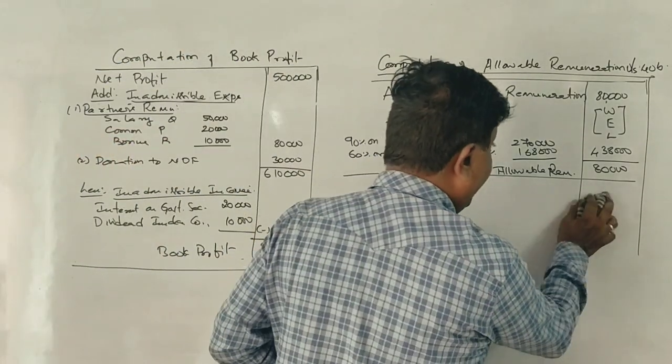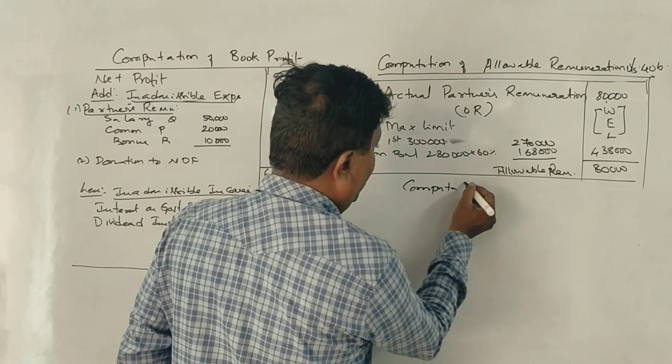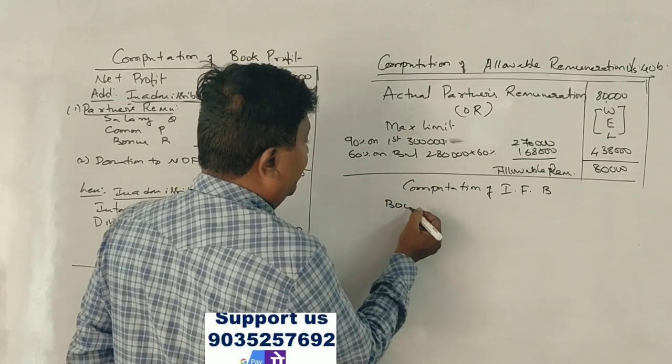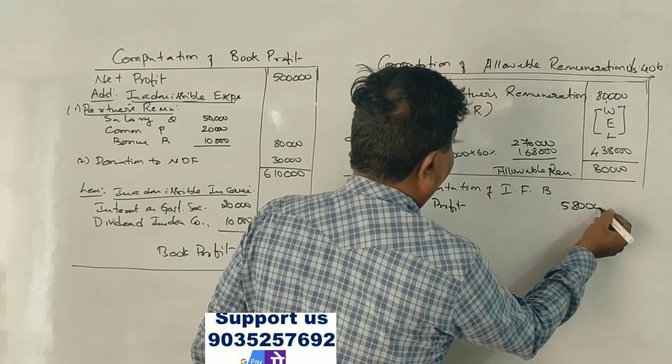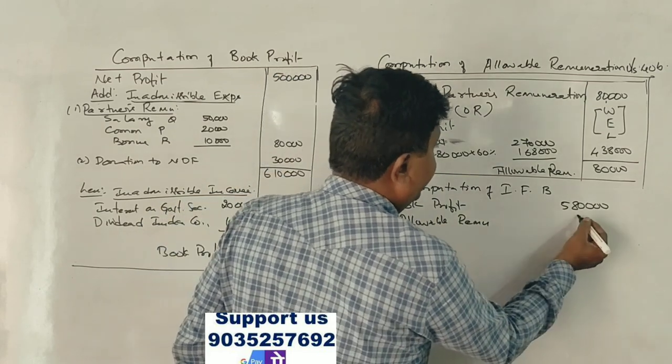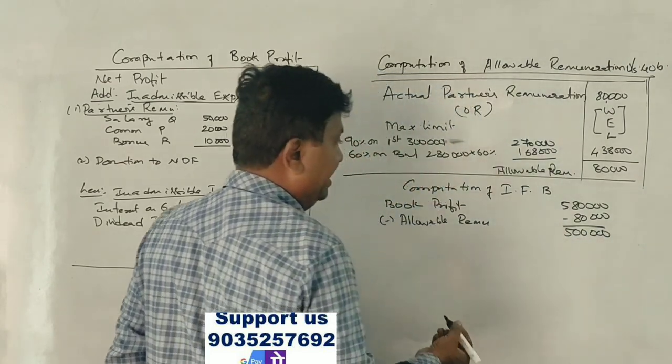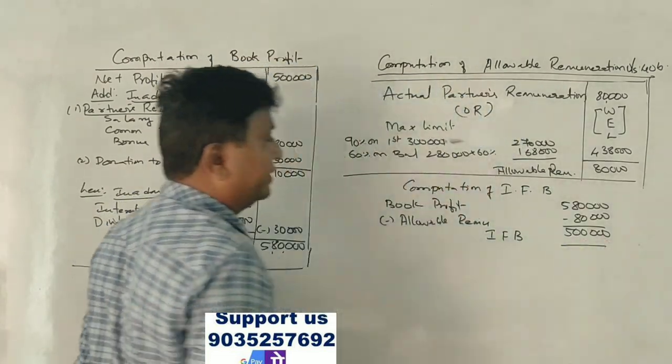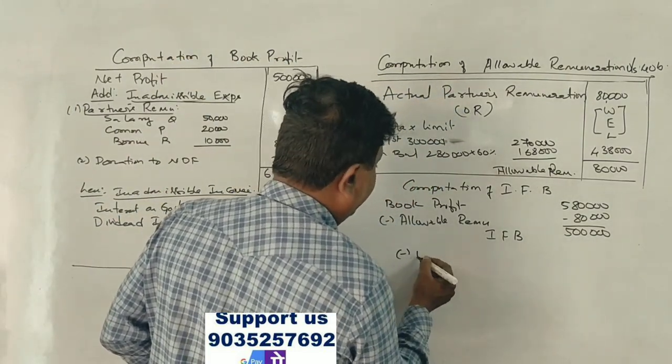Computation of income from business. Book profit is 5 lakh 80,000. Allowable remuneration is 80,000 minus. Then 5 lakhs is the income from business.